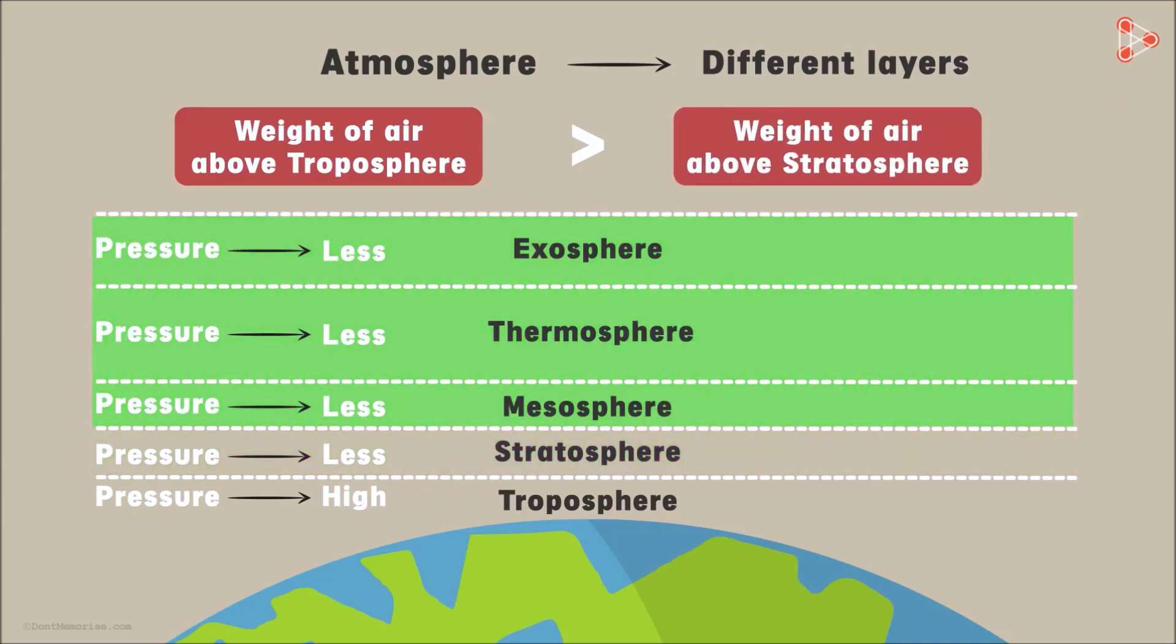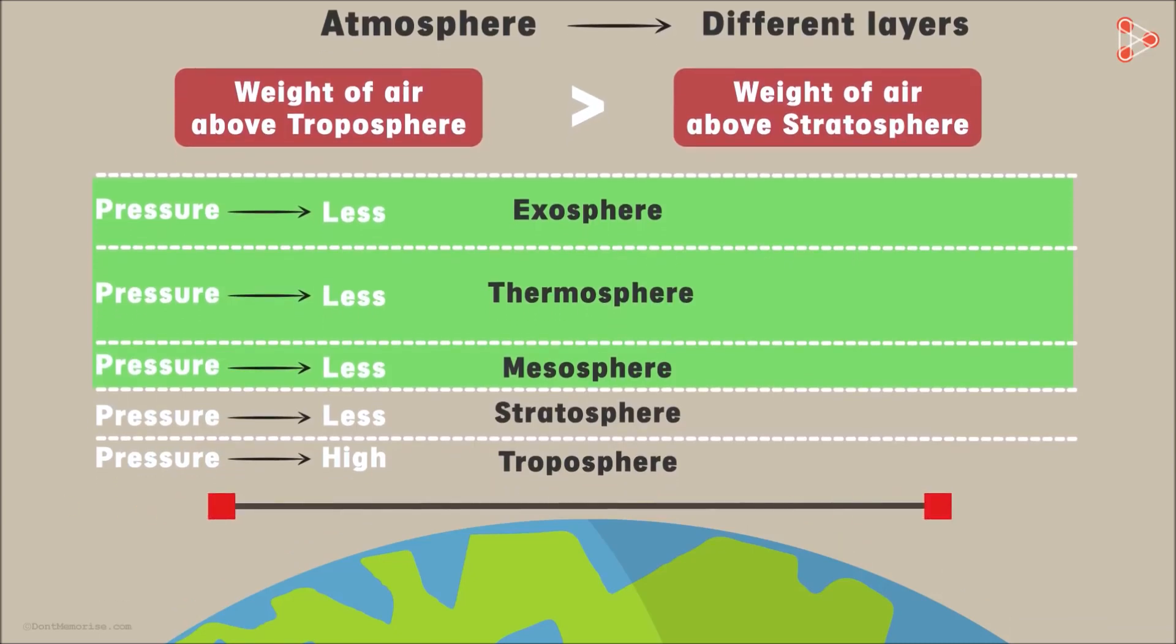The air pressure also acts in every direction and not only in the downward direction. And finally, just like the pressure in liquids, the air pressure at a particular height above the earth's surface is same in all directions. That is, if I take these two points at the same distance above the earth's surface, then the air at this point will exert an equal pressure in all the directions just like the air at this point.